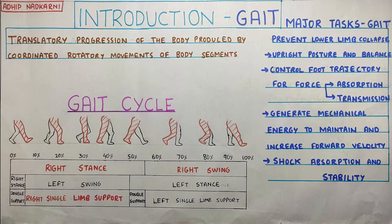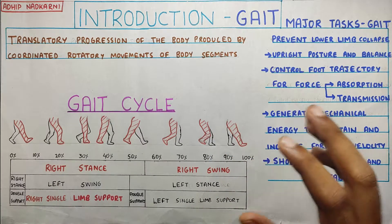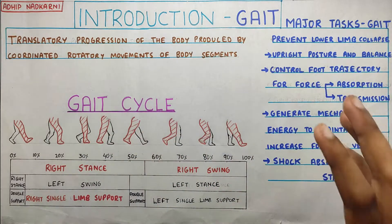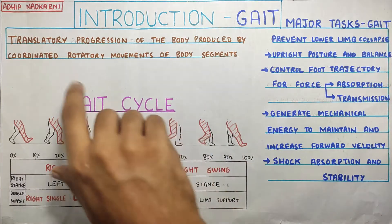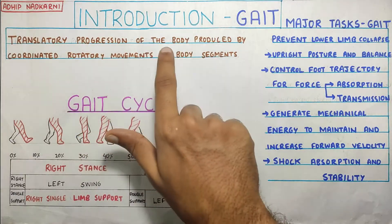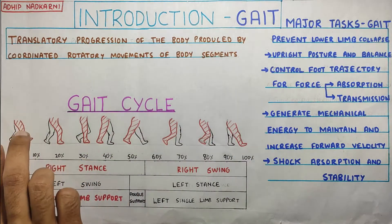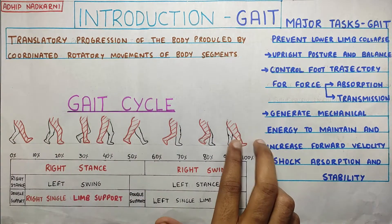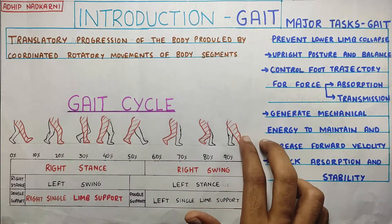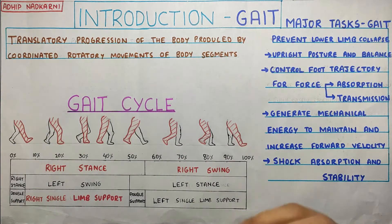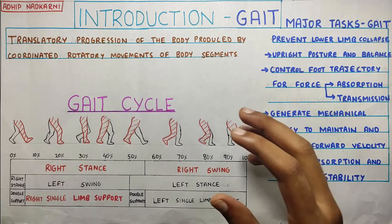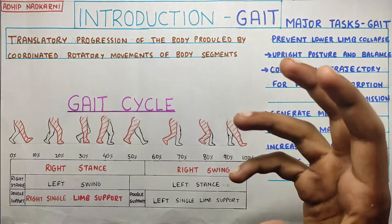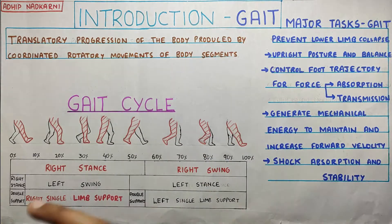I'll see if I can make a video on complex biomechanical gait analysis in the future and post it as soon as possible. Going back to the gait definition — it is a translatory progression of the body, meaning the body goes from one point to another. If you want to understand the types of motion involved, check out my playlist on core concepts or cornerstone concepts where I talk about different types of motion.